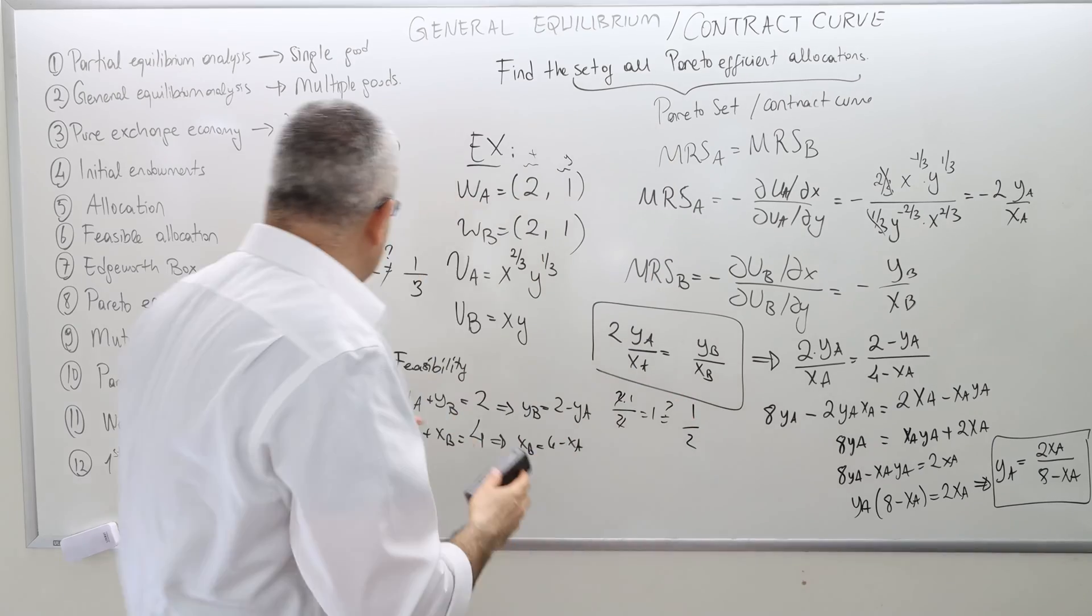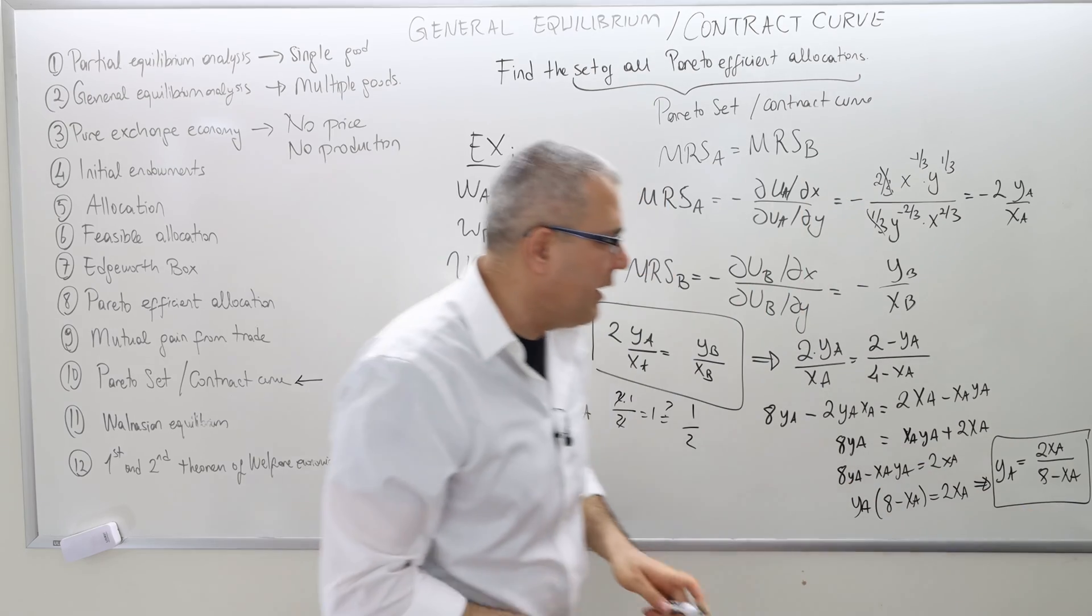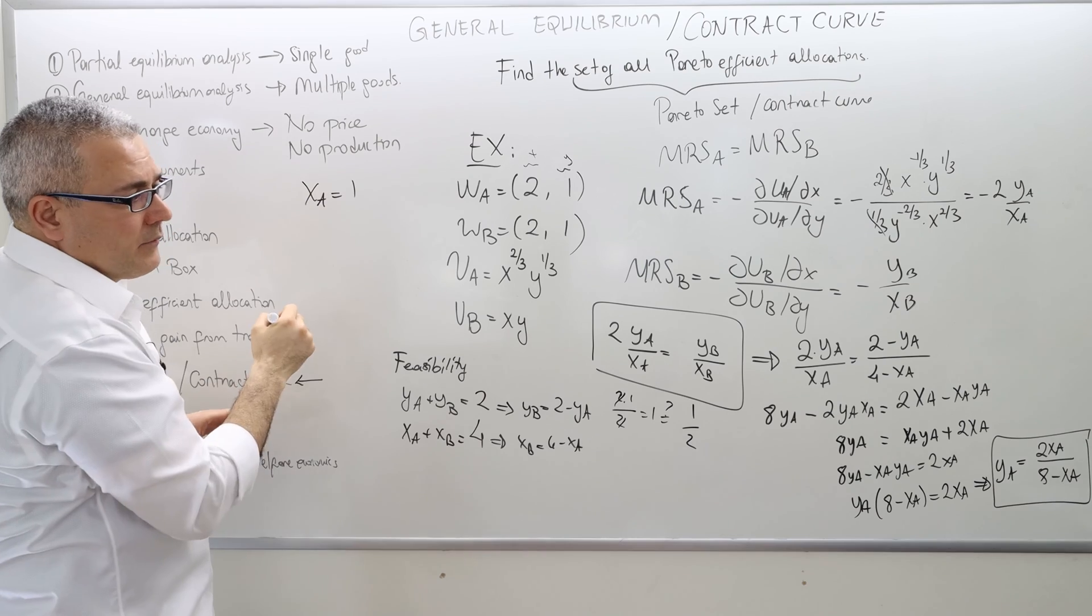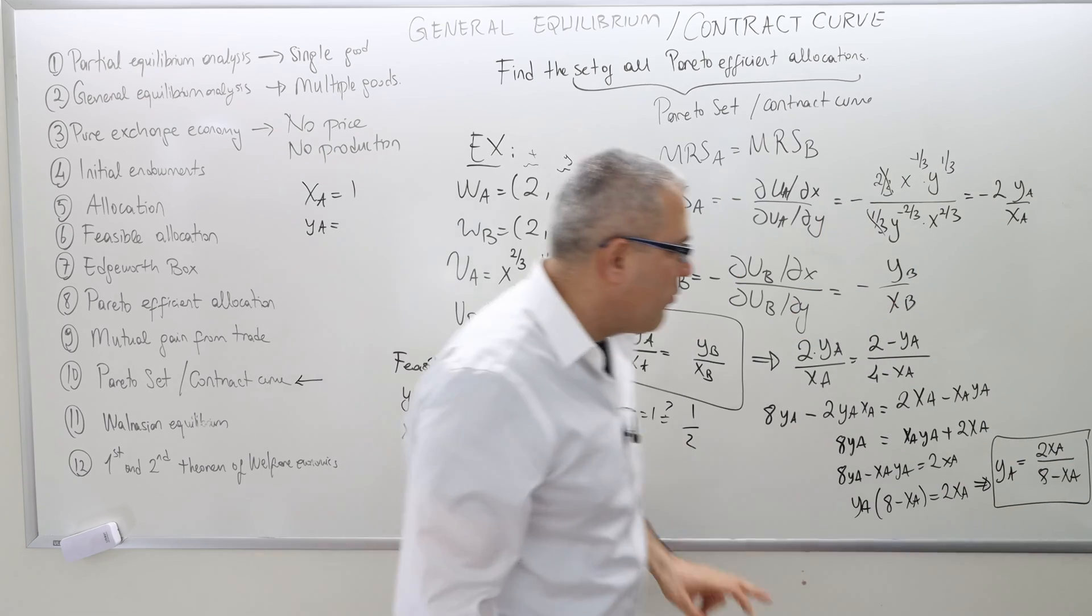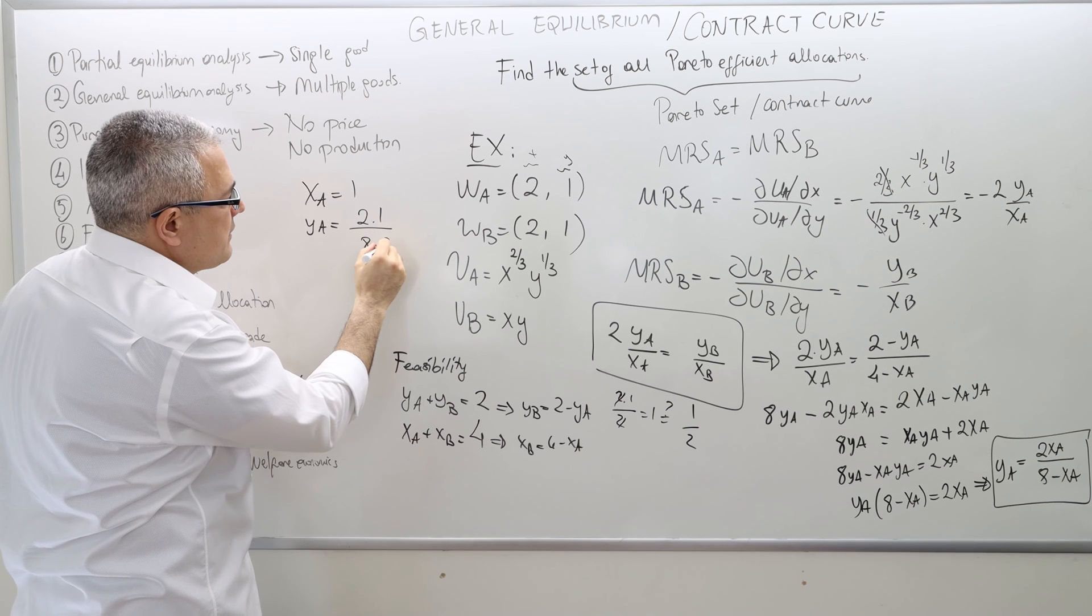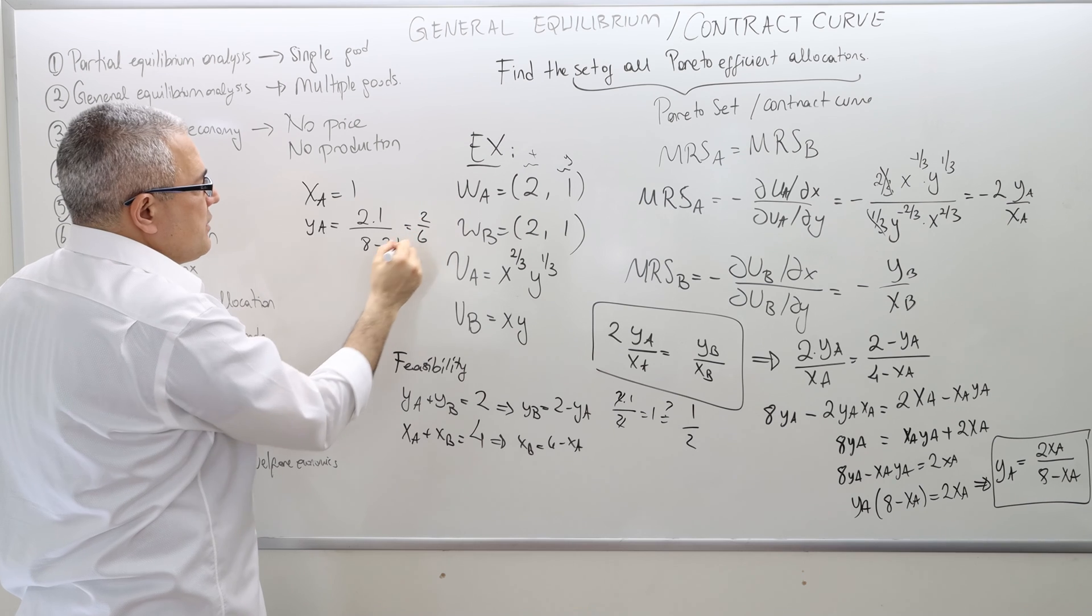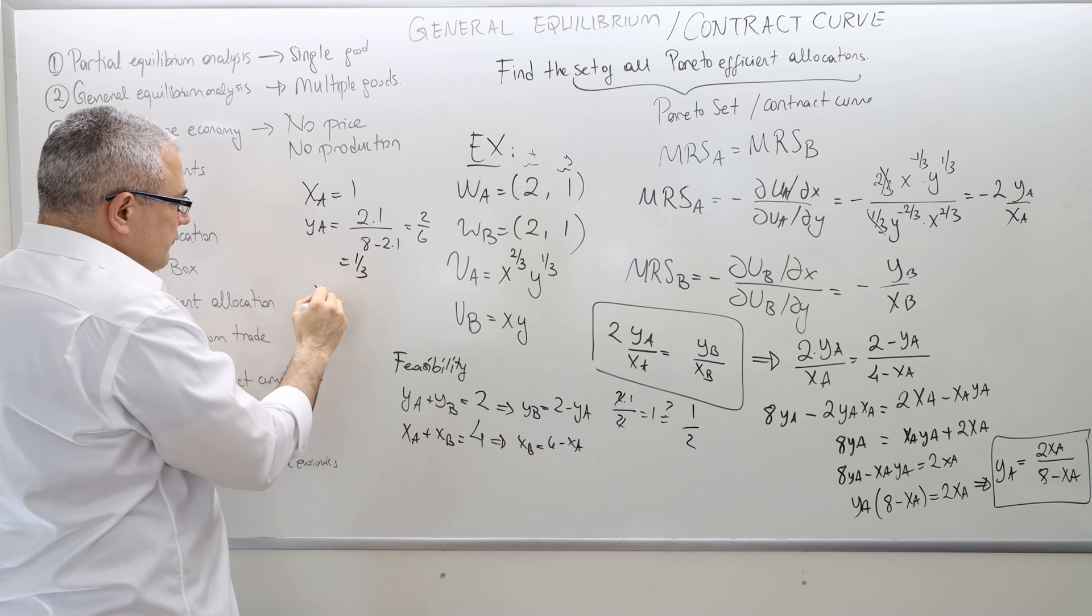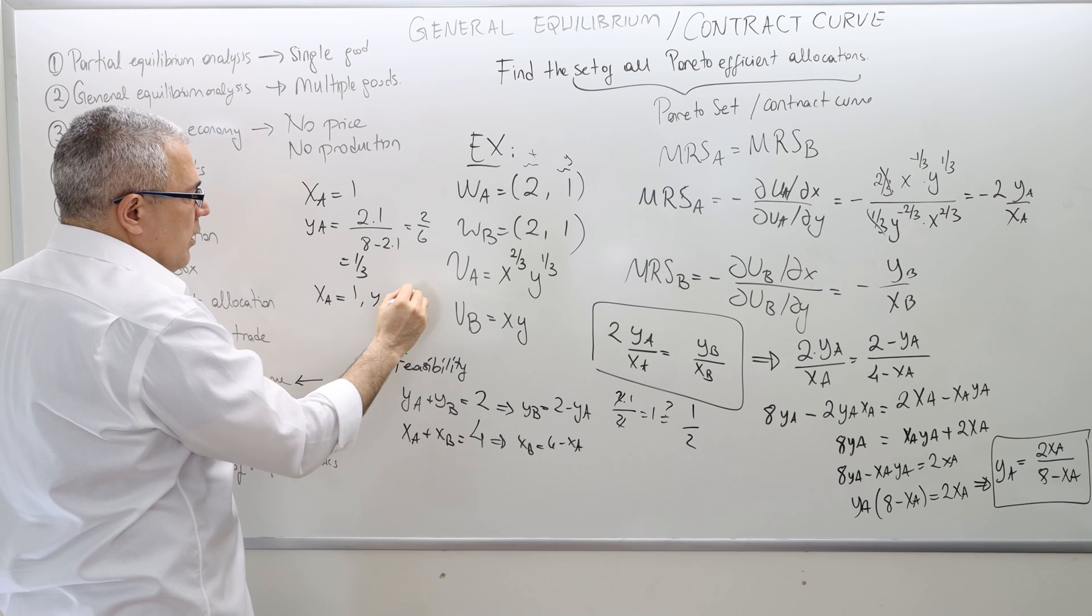So with this fashion, how can I find an allocation which is on the contract curve? Well, now use this. For example, let x_A be 1. Well, then what should be y_A? So if x_A is 1, then y_A should be 2 times 1 divided by 8 minus 2 times 1. So this is 6, 2 divided by 6, which is equal to 1/3.